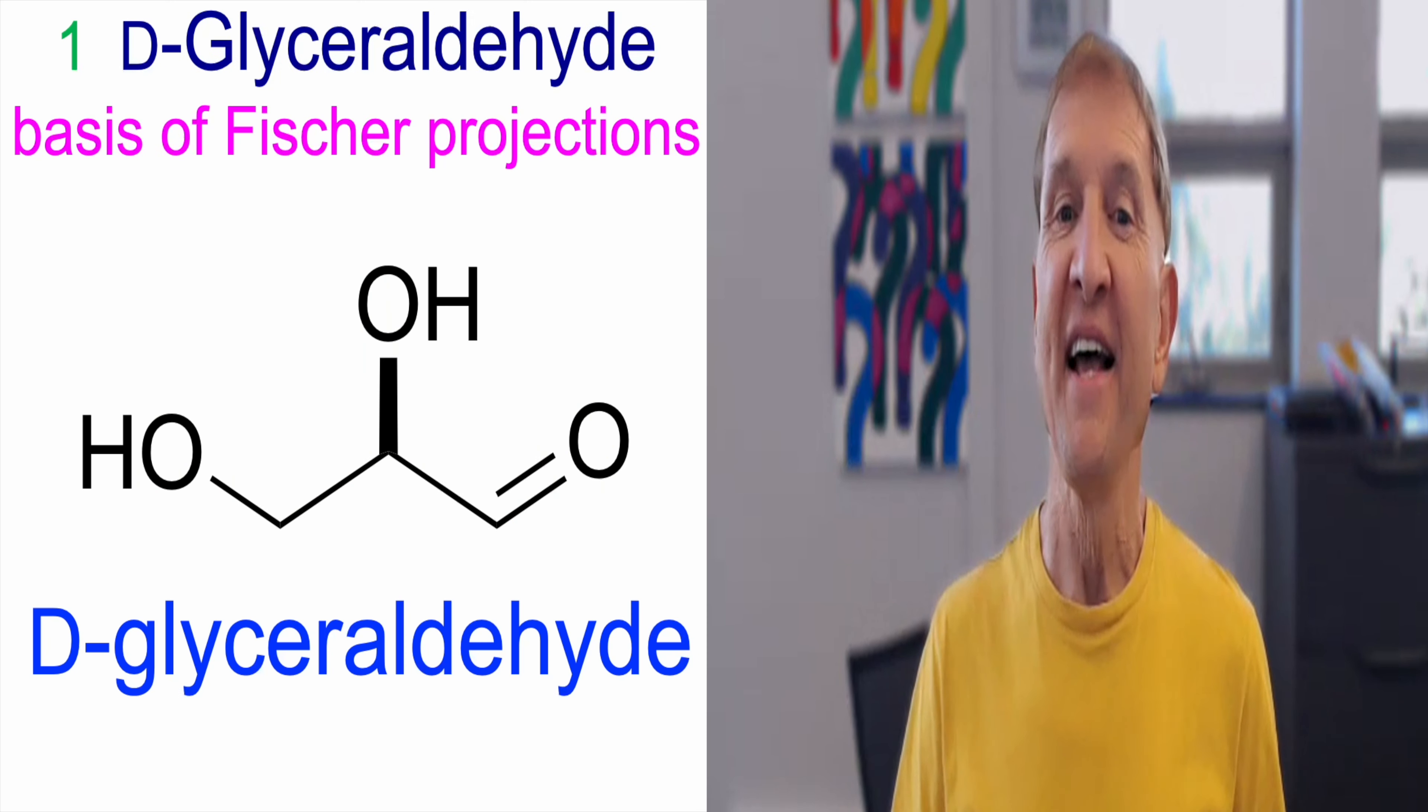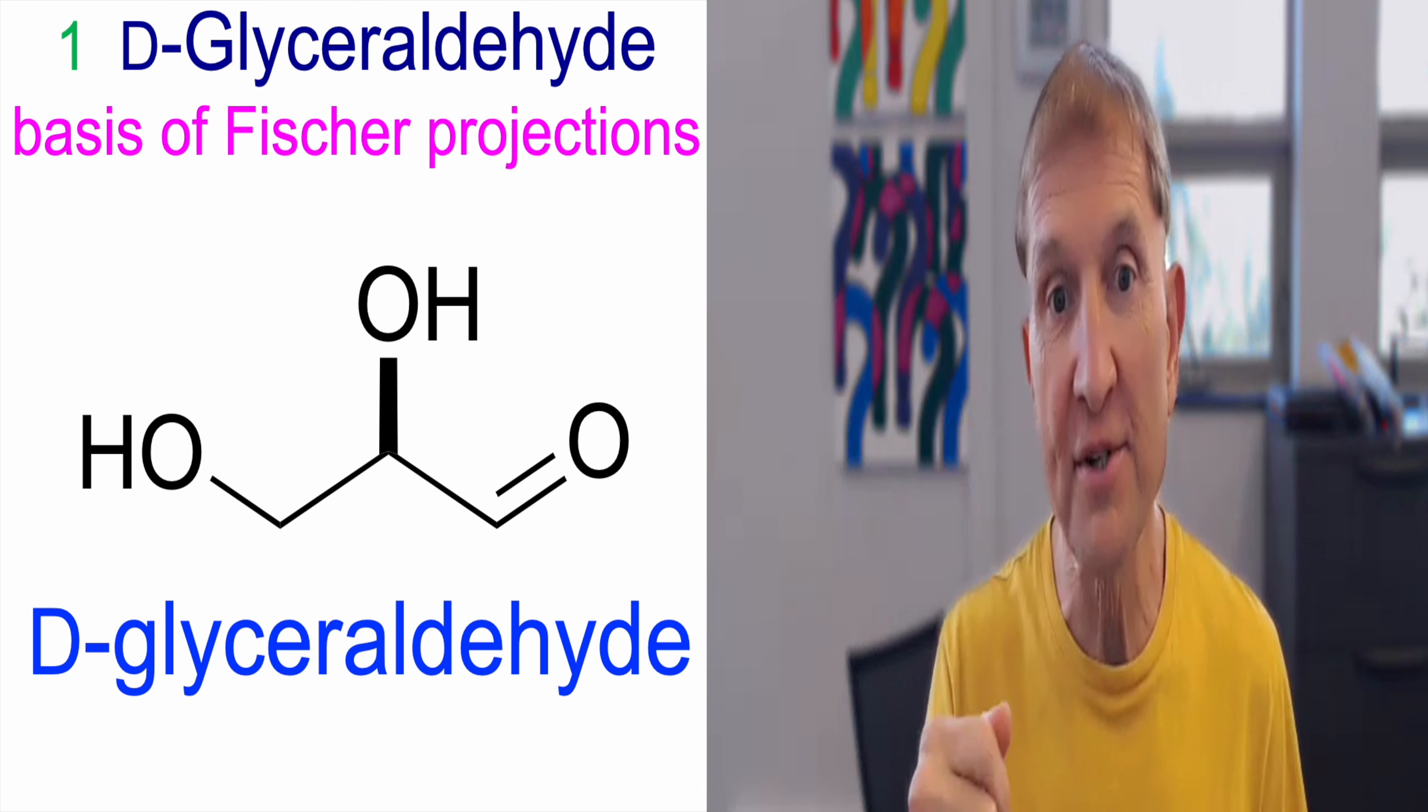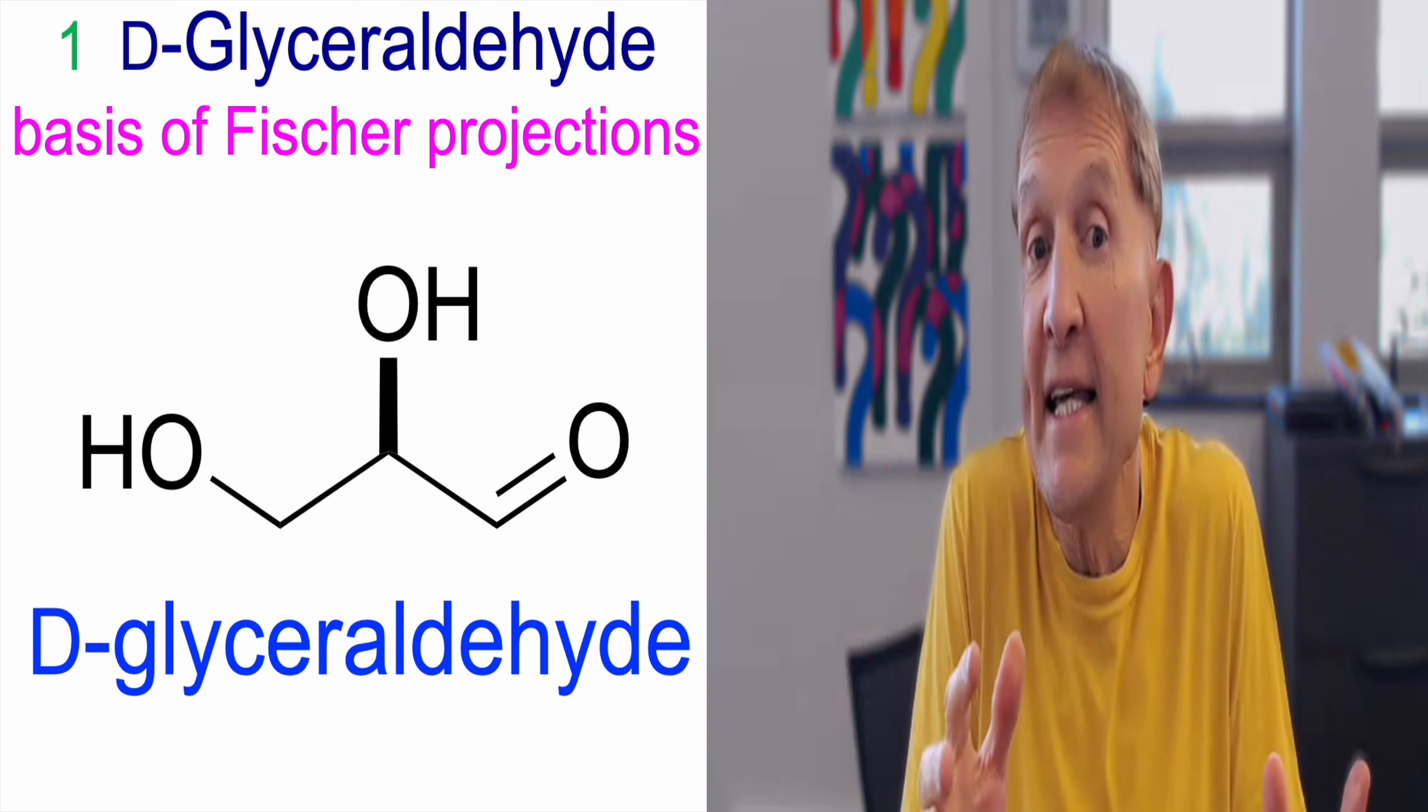Structure number one, D-glyceraldehyde. This is a really important structure to know and it's simple. Three carbons, an aldehyde, but it has to be that configuration. That's the D configuration.